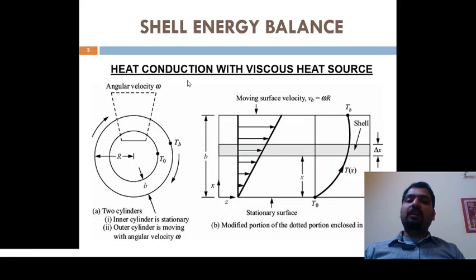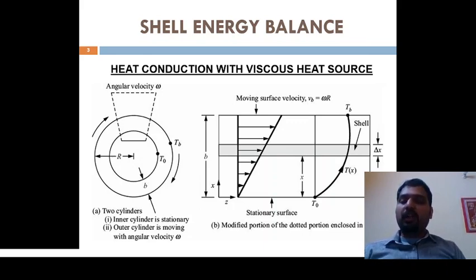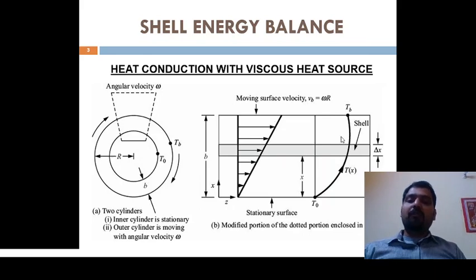Now the case is heat conduction with a viscous heat source. Consider figure (a), which shows a cylindrical geometry in which the inside cylinder is stationary and the outside cylinder is moving with angular velocity omega. The two surfaces are kept at temperatures T0 and Tb. The distance between the two surfaces is given by small b, and the radius of the external surface is capital R. We unroll the cylinder into a rectangular sheet so that the bottom surface is stationary at temperature T0 and the outer surface is at temperature Tb.